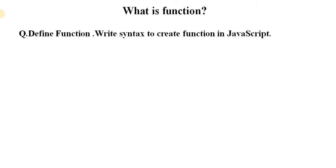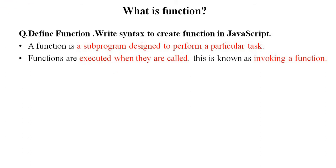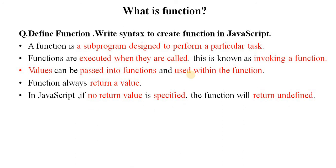A function is a sub-program designed to perform a particular task. Functions are executed when they are called — this is known as invoking a function. Values can be passed into functions and used within the function. A function always returns a value; in JavaScript, if no return value is specified, the function will return an undefined value. Functions are objects in JavaScript.